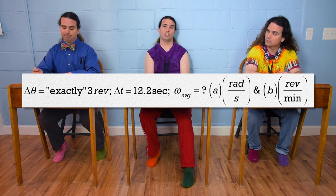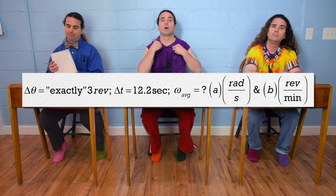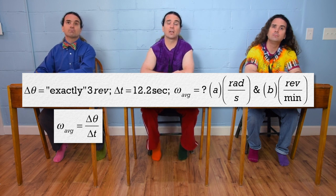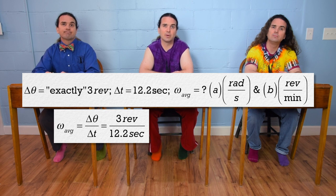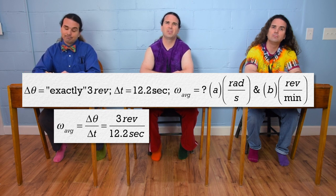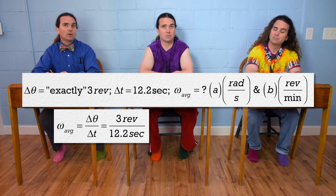Okay, the equation for average angular velocity is omega equals change in angular position over change in time. So, three revolutions over 12.2 seconds, but that would give us revolutions per second, and we need radians per second.